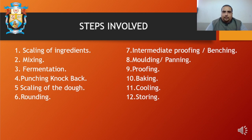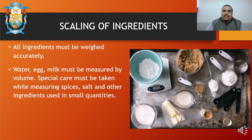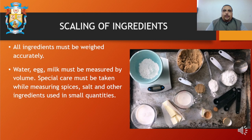Now let's go through each process one by one. The first one is scaling of ingredients. Every single ingredient is individually weighed and then mixed together. Remember, baking is all about weighing the different ingredients to a precise consistency. While baking any bakery product, you need to weigh or scale the ingredients in the right specific way as the recipe suggests.